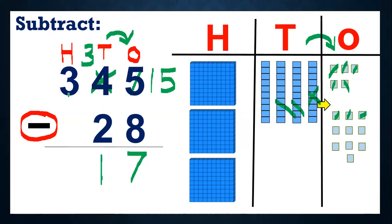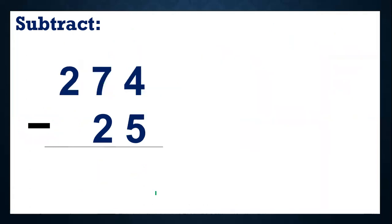Now here we have three hundreds. Do we have any digit to remove, children? No, right? We don't have anything to remove, so we will write three as it is. So we got the answer three hundred seventeen. So like this, you need to do subtraction. Let's see another example.